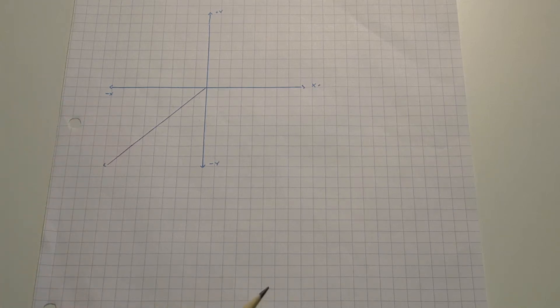In this question we are given a vector with a magnitude of 7 centimeters and we have to find the direction and its x and y components.